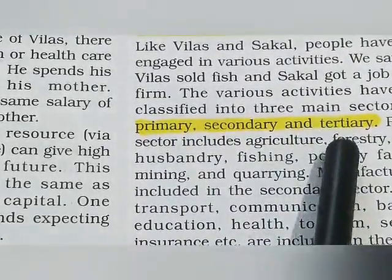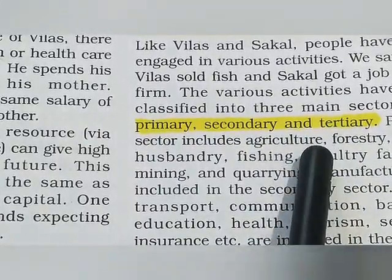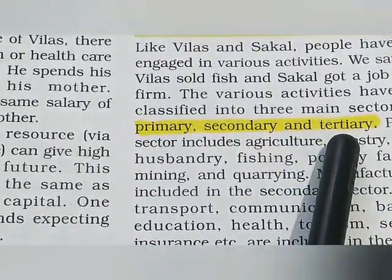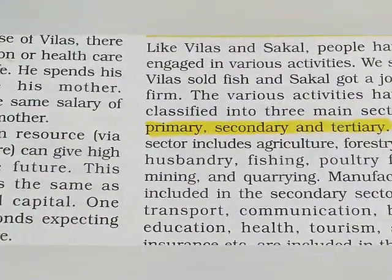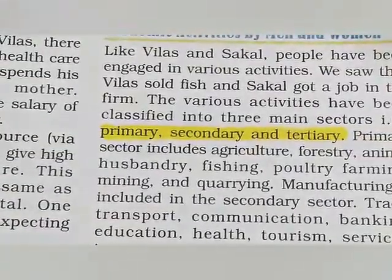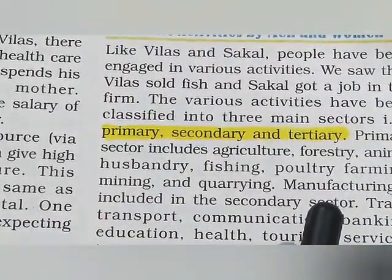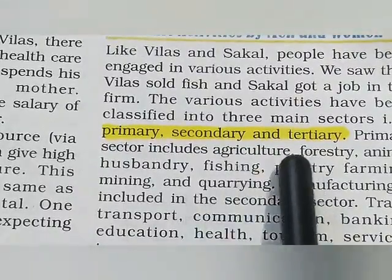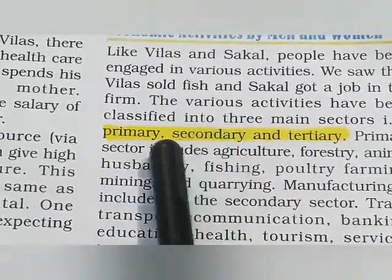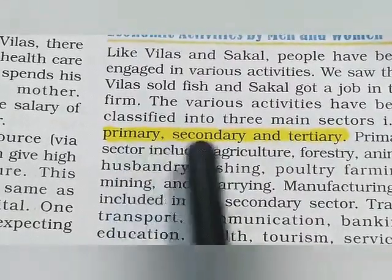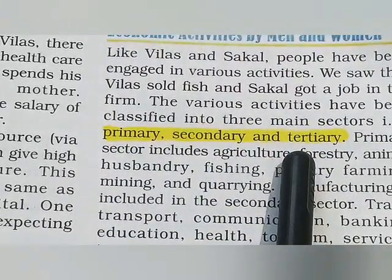And the tertiary sector basically provides the required services. For example, whatever we are producing in the primary sector, we need transport for that. In tertiary activities or the tertiary sector we don't produce anything. Here we need transportation. If you want to communicate with another person, you need mobile phones — so communication service is provided by the tertiary sector. All services are provided by the tertiary sector. Primary sector gives raw materials, secondary manufactures them, and in the tertiary sector there is no production of any kind.